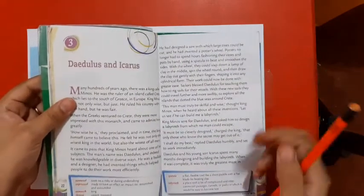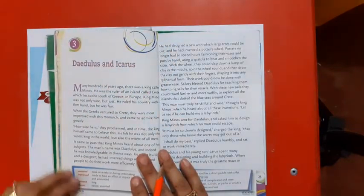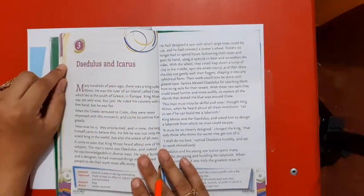Let's move on to our next segment, which is the reading of the chapter. Open your books to page number 22, unit 3, Daedalus and Icarus.